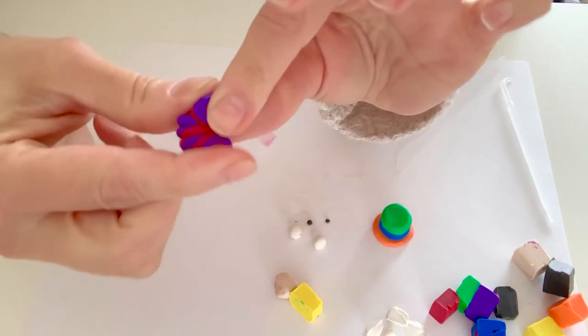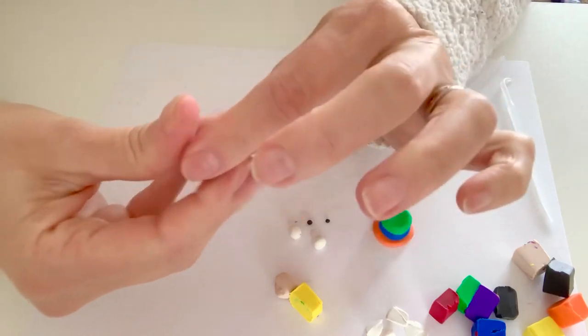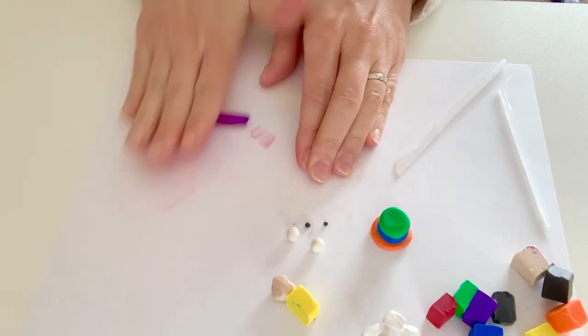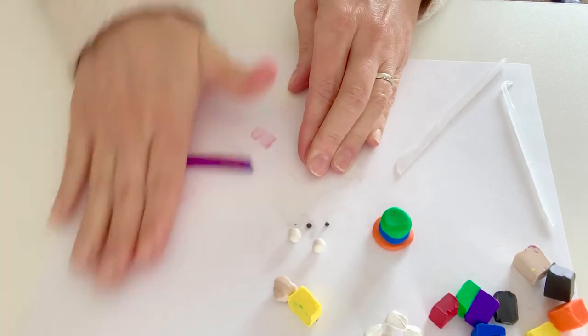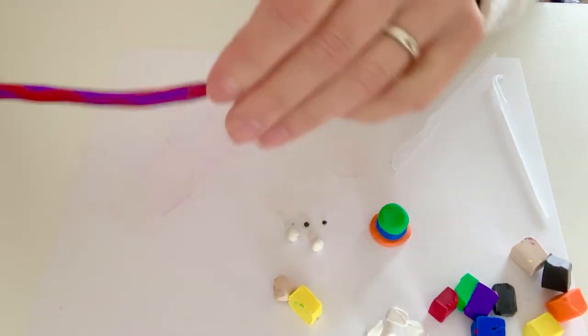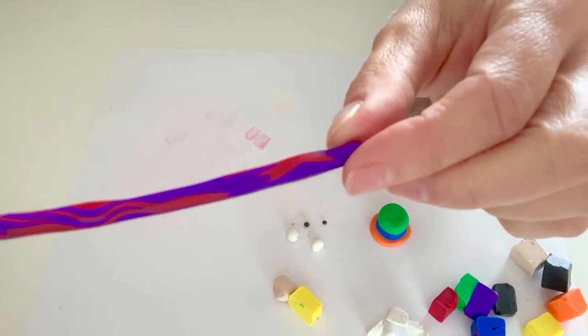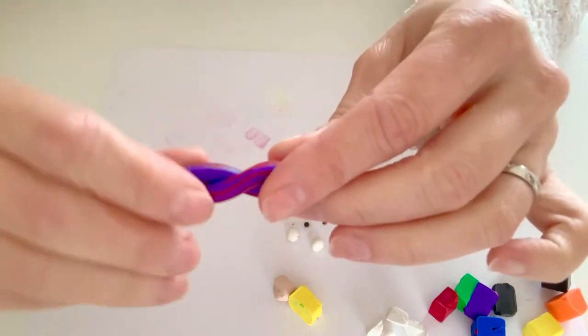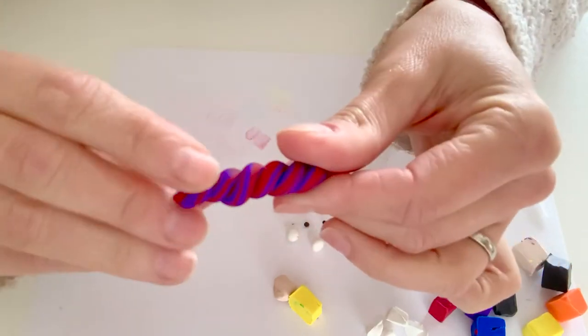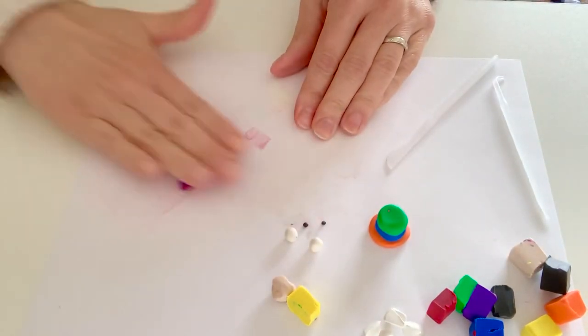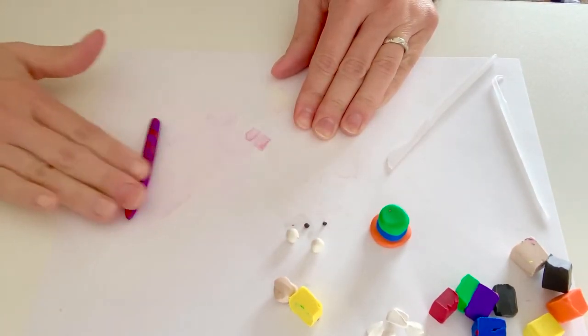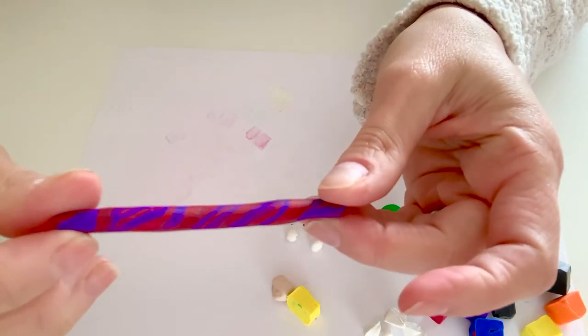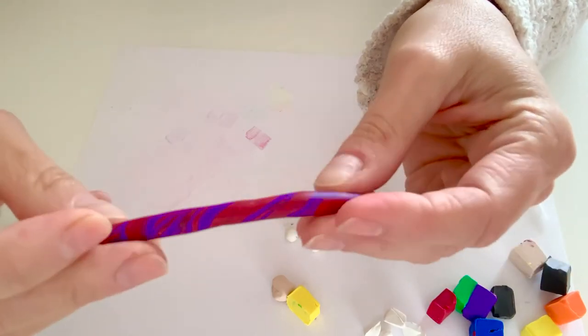And I'm going to twist it down into a ball. And then I'm going to roll it out into a snake. And you can see those colors are starting to marble and swirl together. I'm going to fold it in half again, give it another twist, roll it.